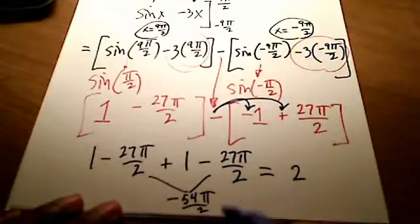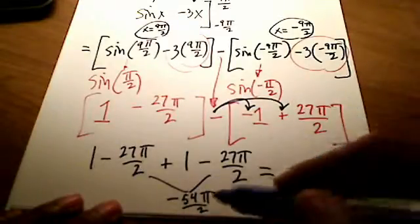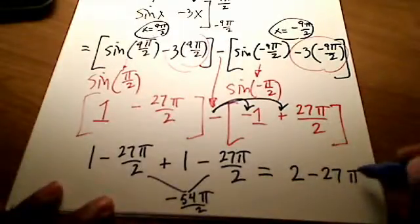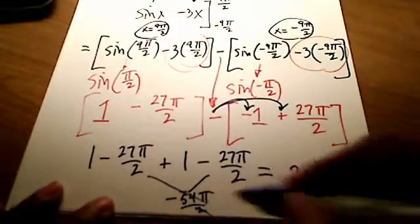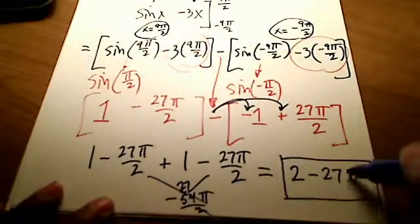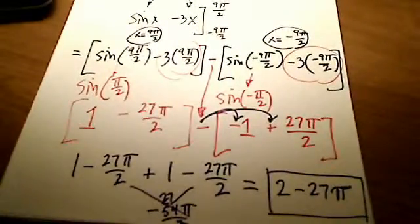The common denominator stays the same of 2. Hey, but 2 goes into 54 27 times. So I've got a negative 27π. I no longer have a 2 on the bottom, right? Because 2 goes into 54 27 times. And there is my final answer in terms of π. 2 minus 27π. I hope that helps and makes sense.